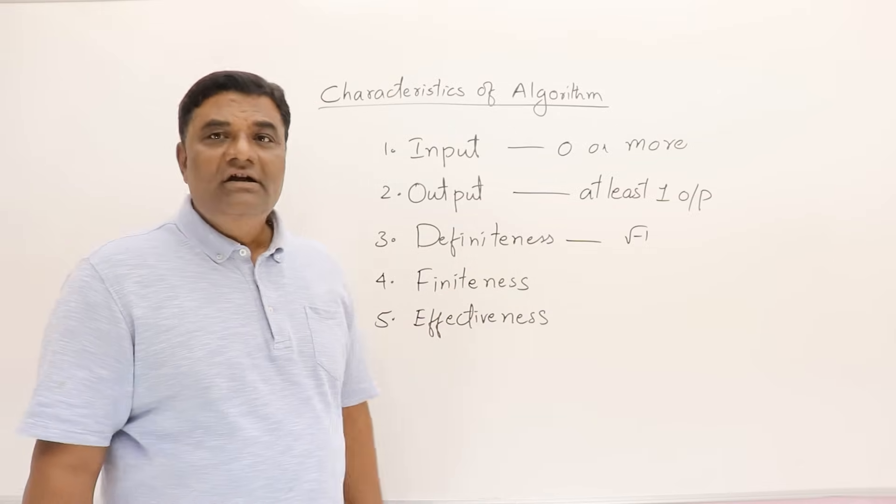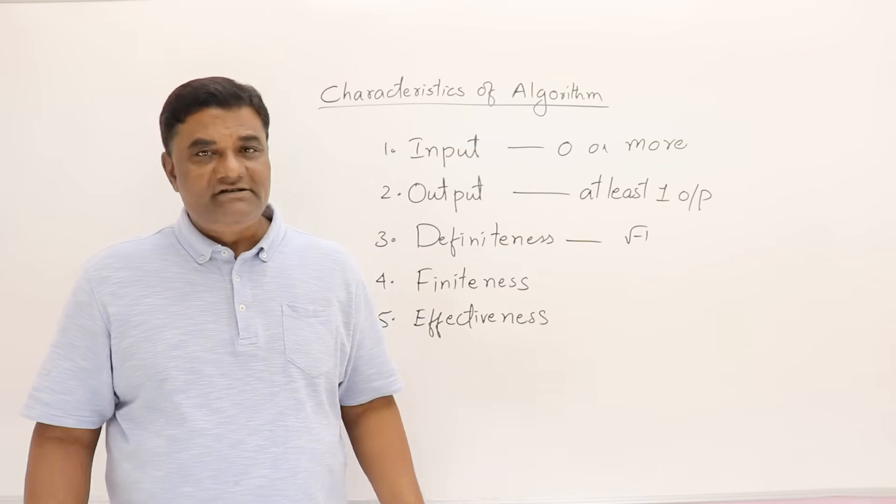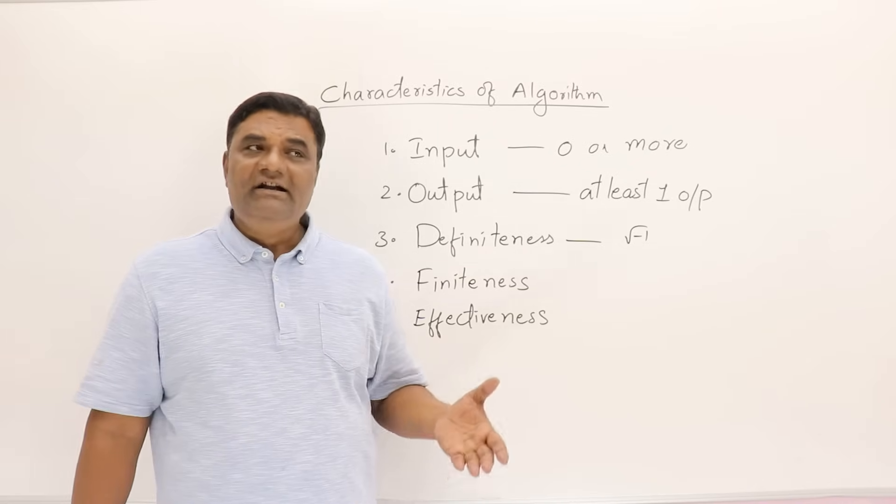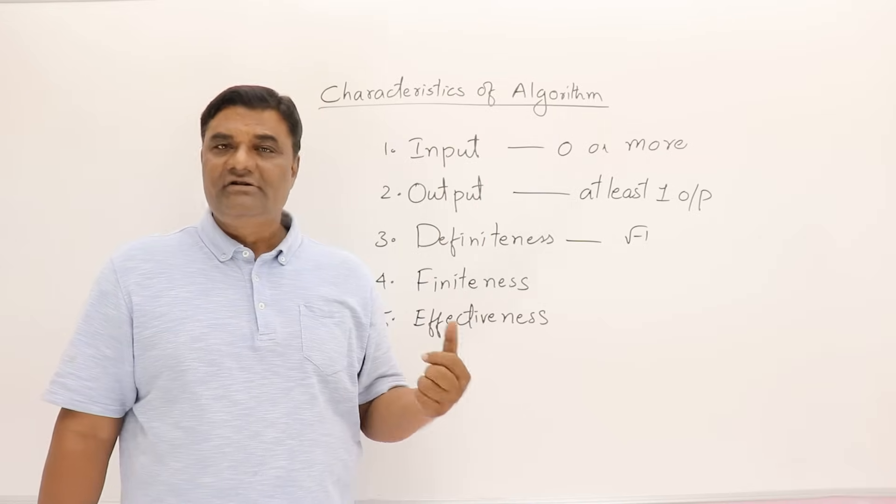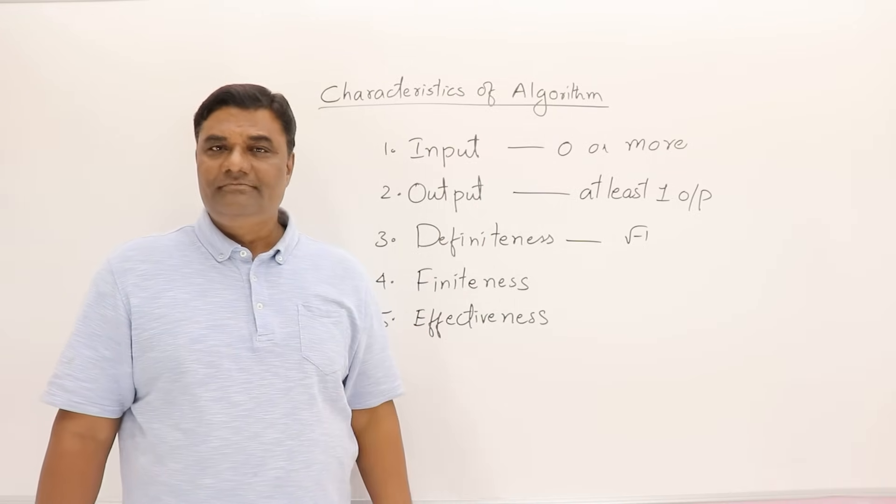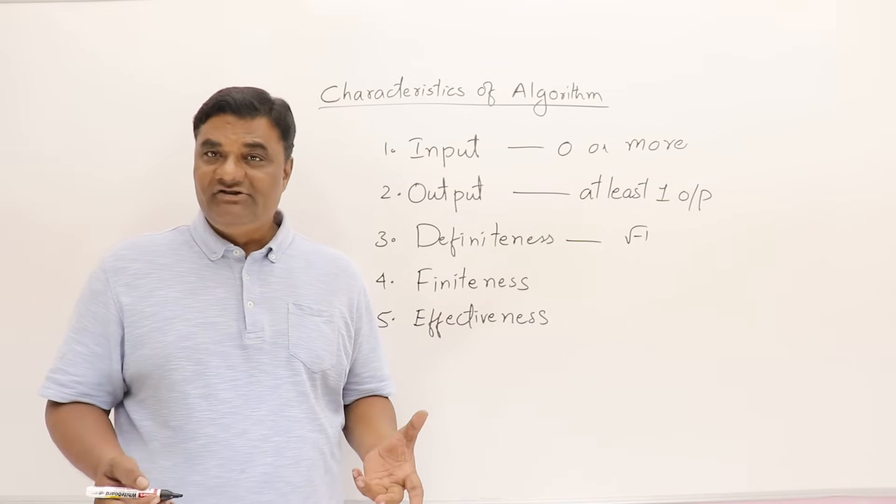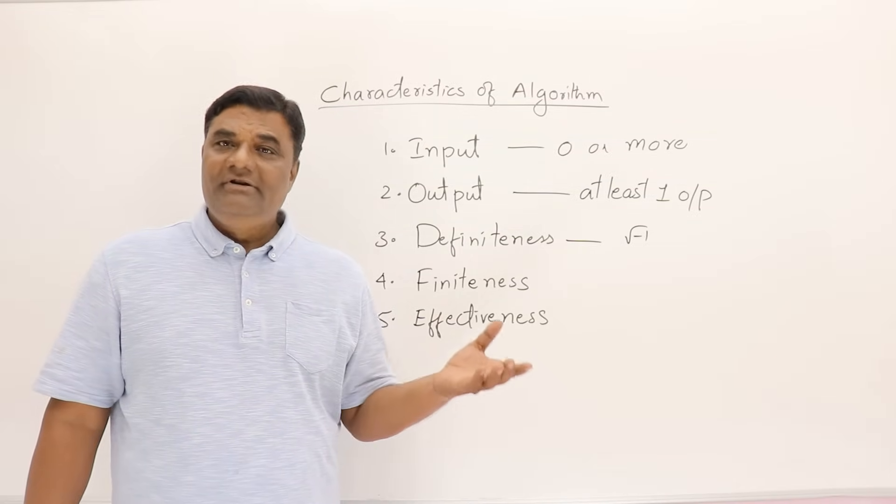Then, effectiveness. This is simple. You should not write unnecessary statements in an algorithm. Whatever statement you write, the objective is that it should do something, serve some purpose in the procedure, in the steps of an algorithm. Don't write unnecessary statements. See, an algorithm is like a procedure.